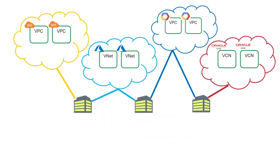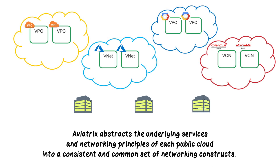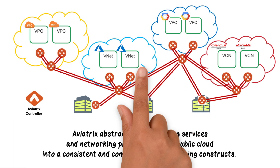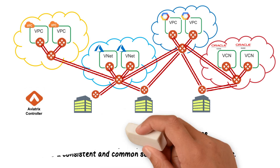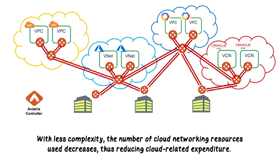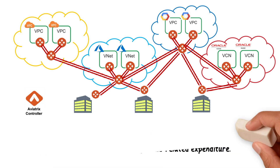This platform approaches multi-cloud networking by abstracting the underlying services and networking principles used by each public cloud into a consistent and common set of networking constructs via Aviatrix. With the Aviatrix Controller, the platform applies these constructs to interconnect multiple clouds, eliminating the need to backhaul traffic. With less complexity, the number of cloud networking resources decreases, thus reducing cloud-related expenditure.